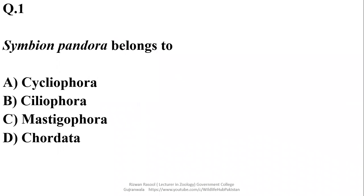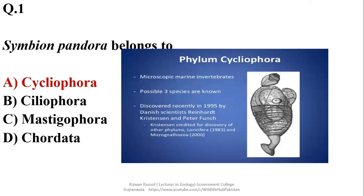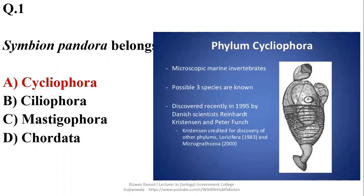Symbion tendora belongs to? It's a newly discovered organism having 3 species and they are classified into a separate phylum known as Cycleophora. That's why the right option is alpha in this case. It was discovered in 1995 by a dentist scientist and it contains 3 noun species only.